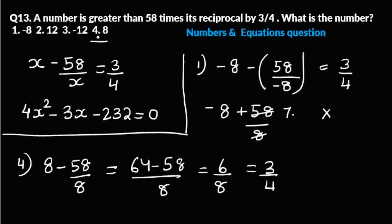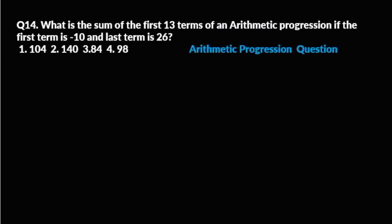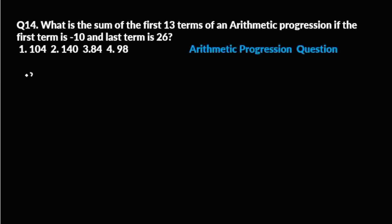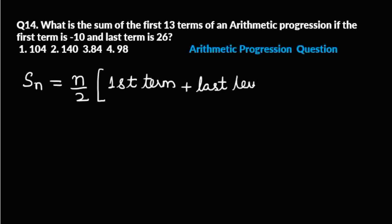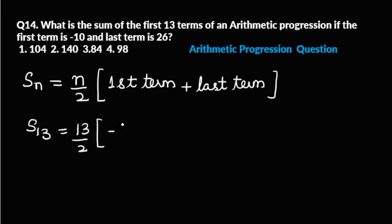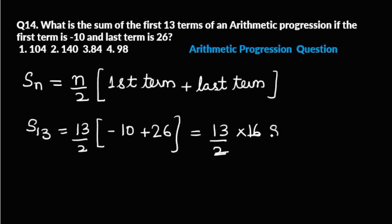Next question: what is the sum of the first thirteen terms of an AP if the first term is minus ten and the last term is twenty-six? You have four options. It is an arithmetic progression question. The formula for sum of n terms is n by two times (first term plus last term). So: thirteen by two into (minus ten plus twenty-six) equals thirteen by two into sixteen equals one hundred and four. The answer is option number one. You just have to remember the formula.